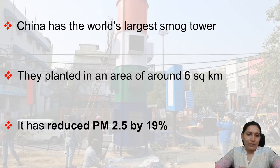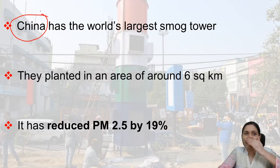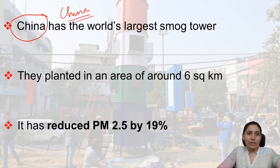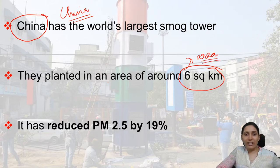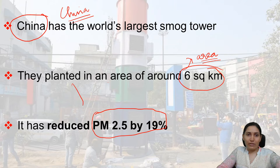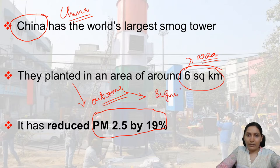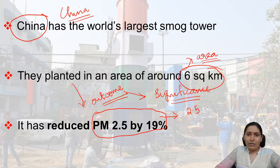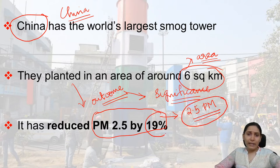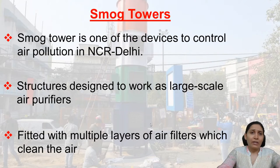China has the world's largest smog tower, planted in an area of around 6 square kilometers. This smog tower has reduced particulate matter 2.5 by 19 percentage — a very significant reduction. This gives us an understanding of the significance of smog towers.